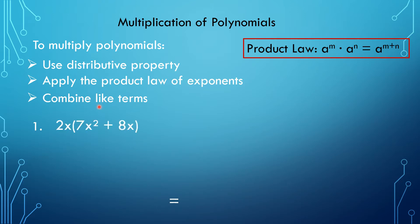So let's have an example. I have here 2x times the quantity 7x squared plus 8x, where I use parentheses as the multiplication sign. So I have monomial times binomial. What I'm going to do is first multiply this monomial to the first term. Multiply 2 times 7, that is 14. Apply the product law: x times x — just copy the variable x and add the exponents, 1 plus 2, that is x cubed. So that is equal to 14x cubed.